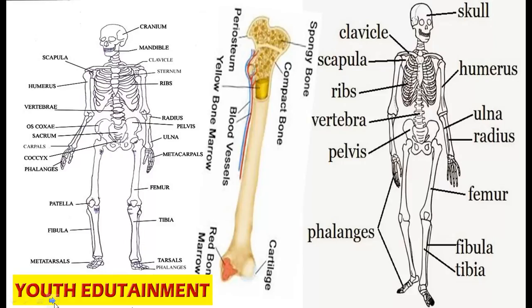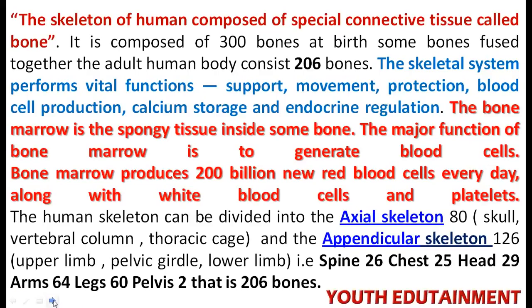You may look at the diagram. The human skeletal system starts from the cranium, mandible, clavicle, sternum, ribs, and many more bones — there are 206 bones in the human body. The human skeletal system is composed of a special connective tissue called bone. It is composed of 300 bones at birth; some bones fuse together, so the adult human body consists of 206 bones.